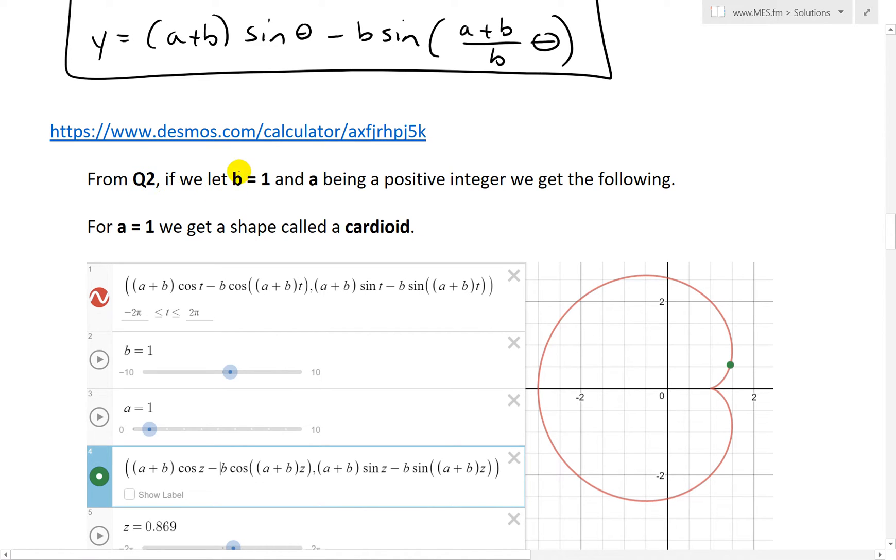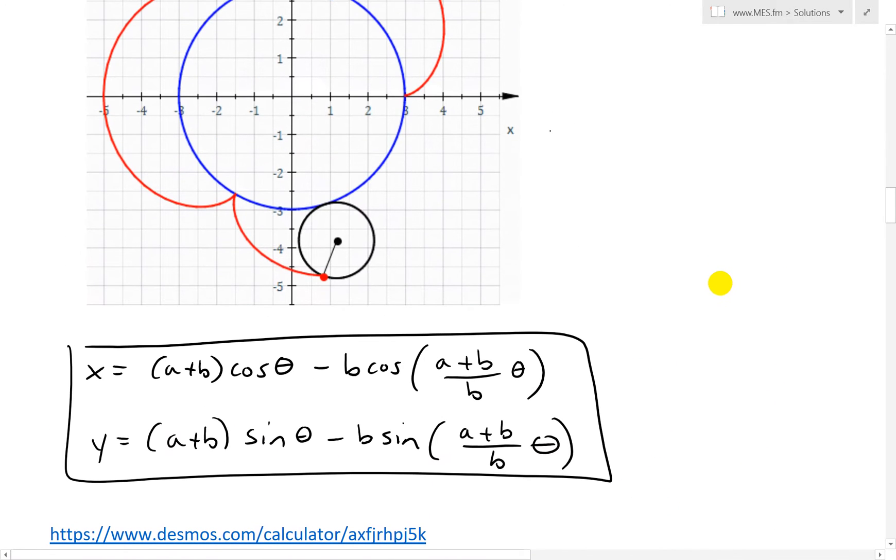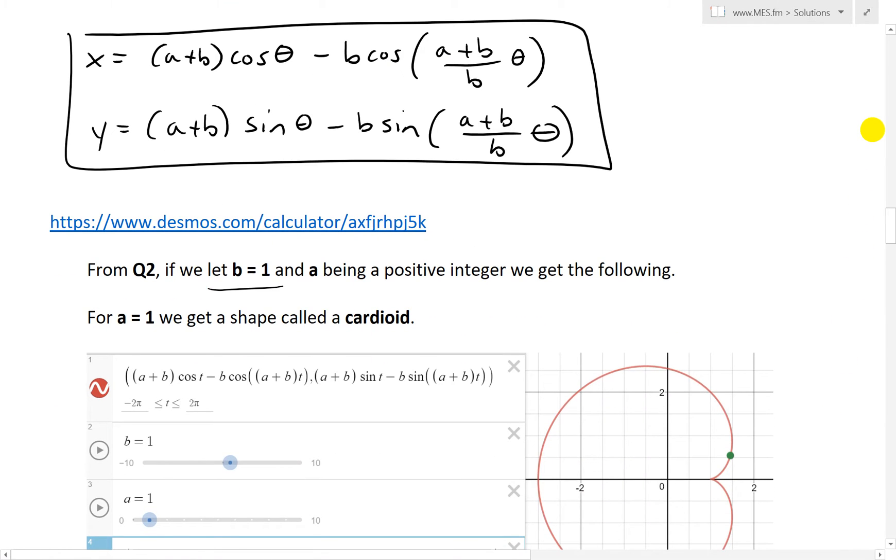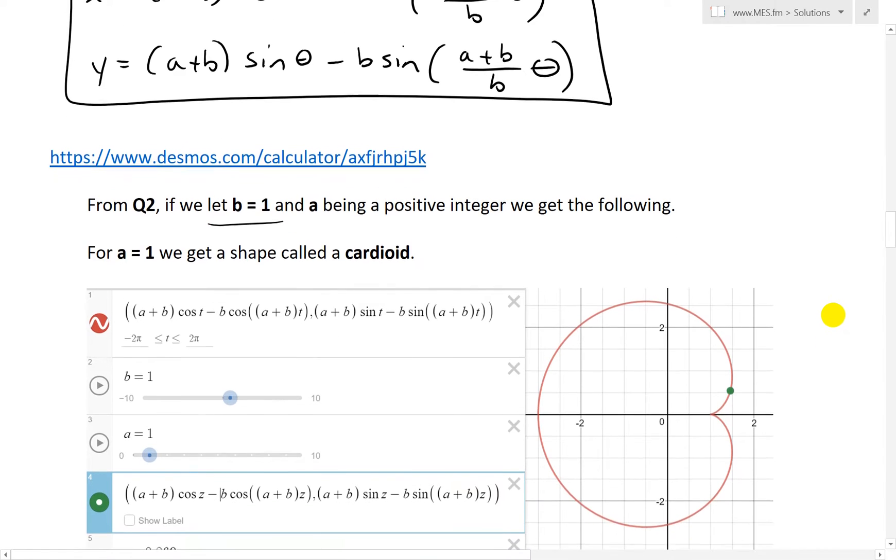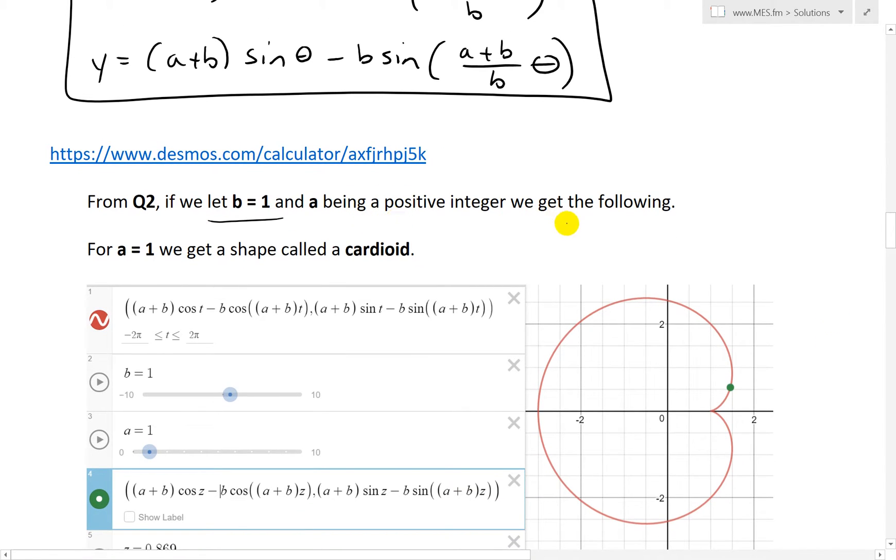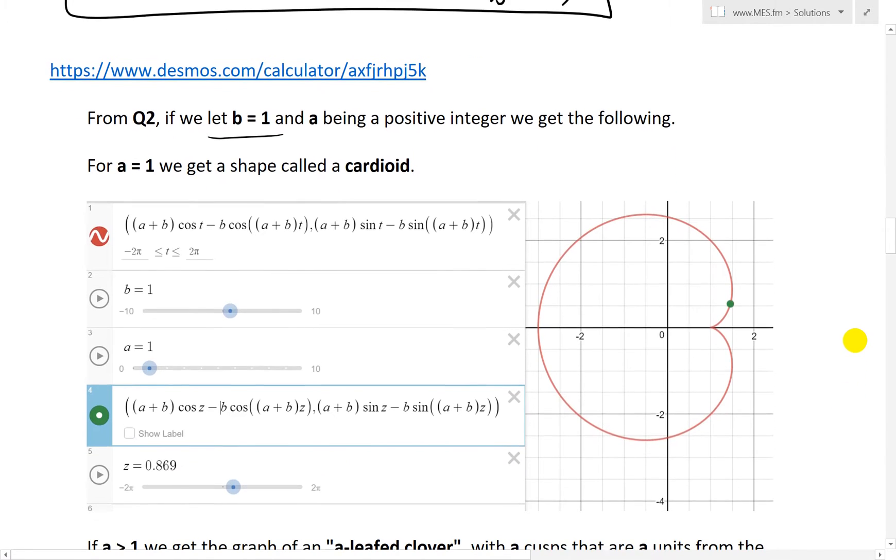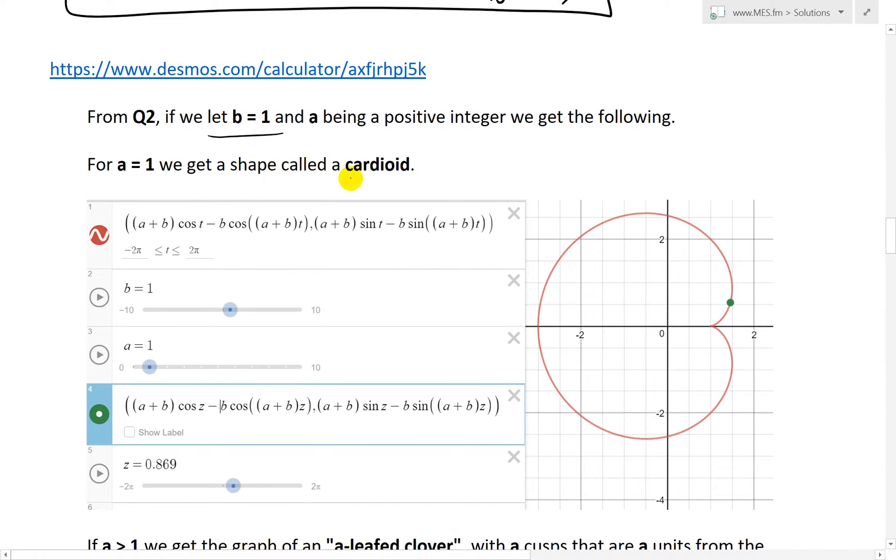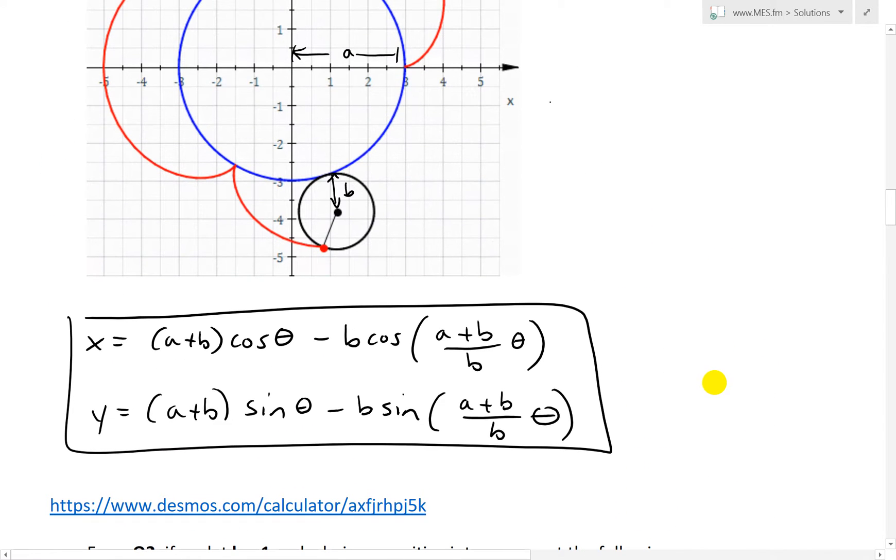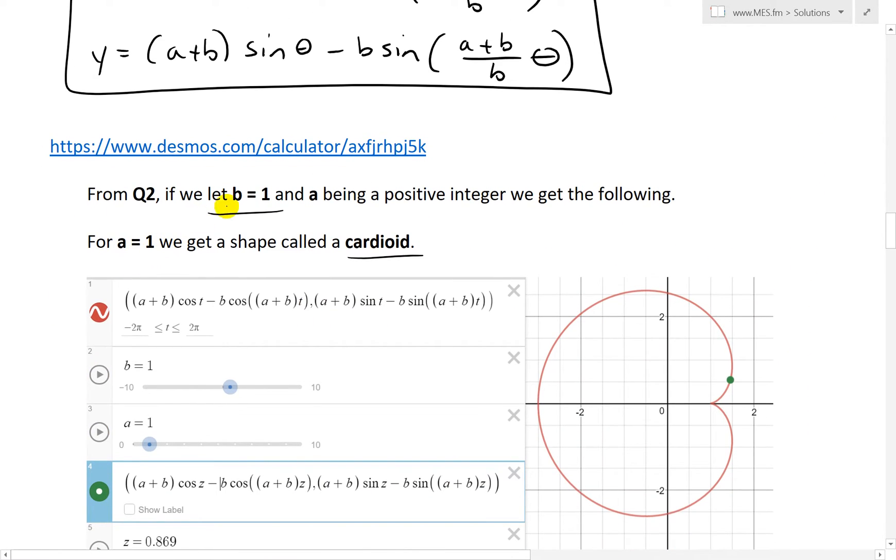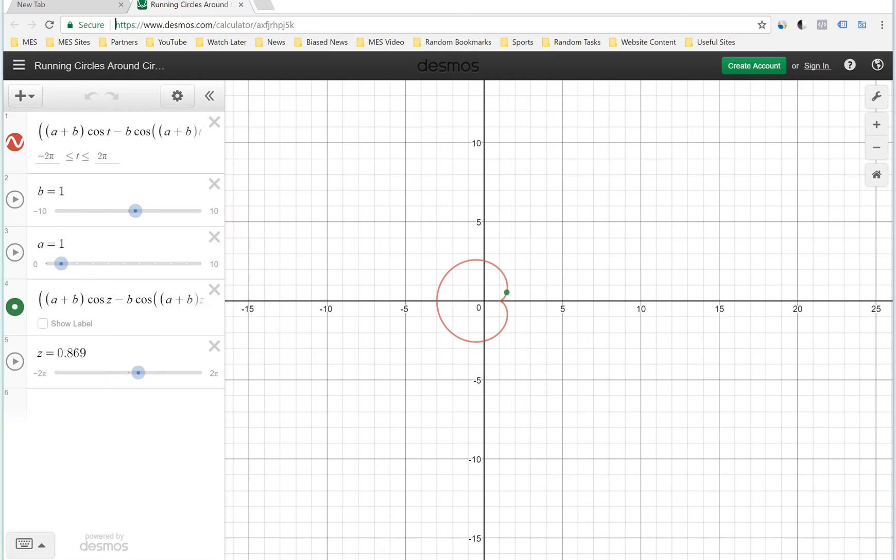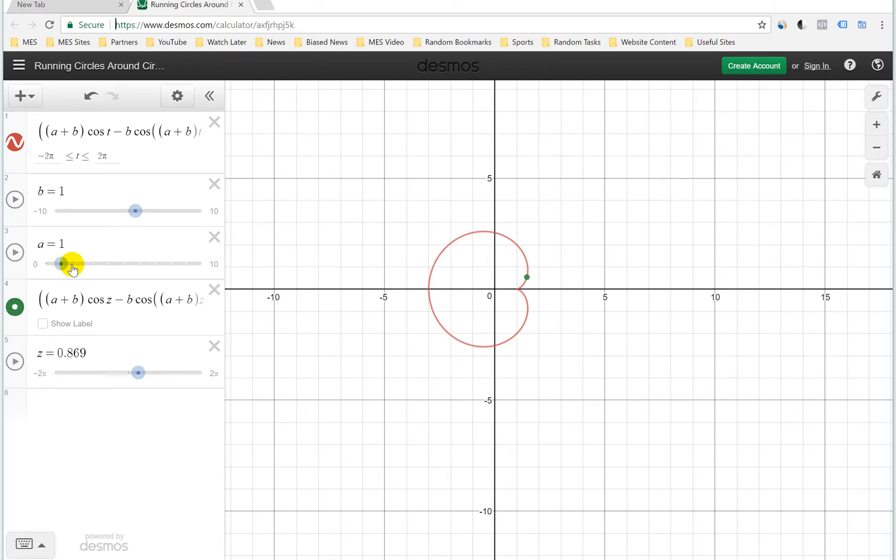If we let b equals to 1, remember again, b is the radius of the outside circle. So this is the b and then the inner radius is a. So that's the outer one and this is the inner one. So in this case we're just using a unit radius b equals to 1 and then from question 2 we just let a be a positive integer and then what we get is the following kind of curves.